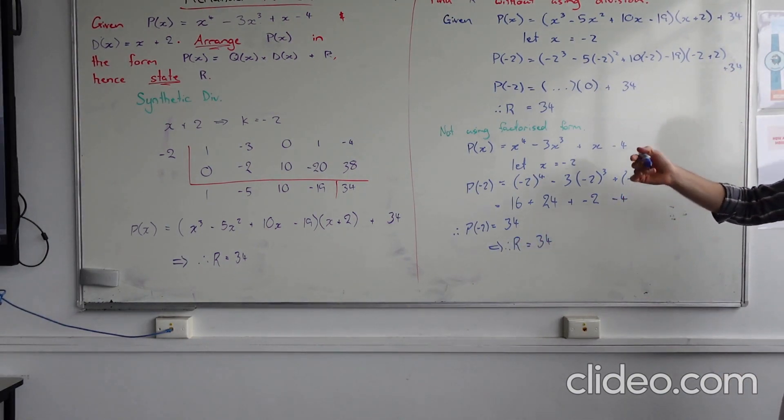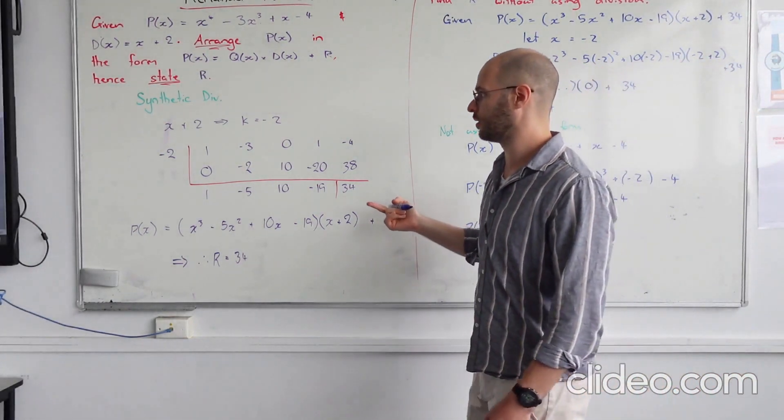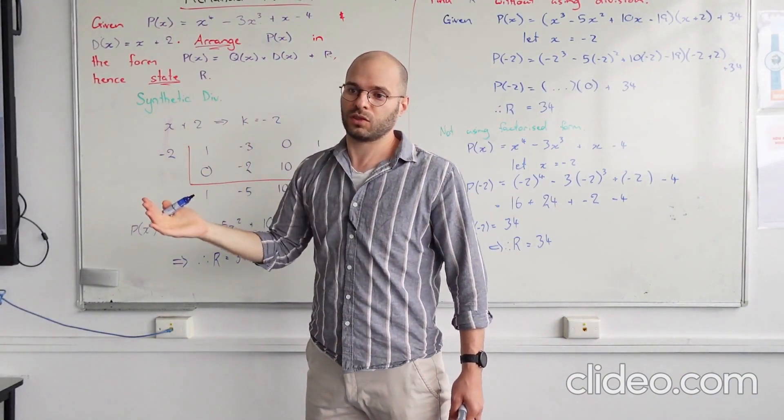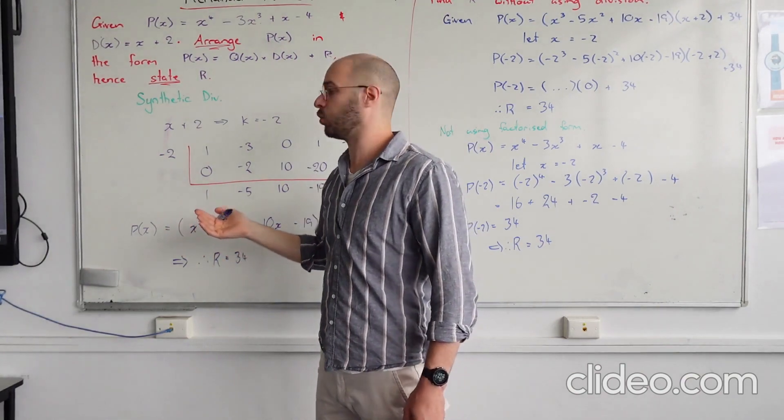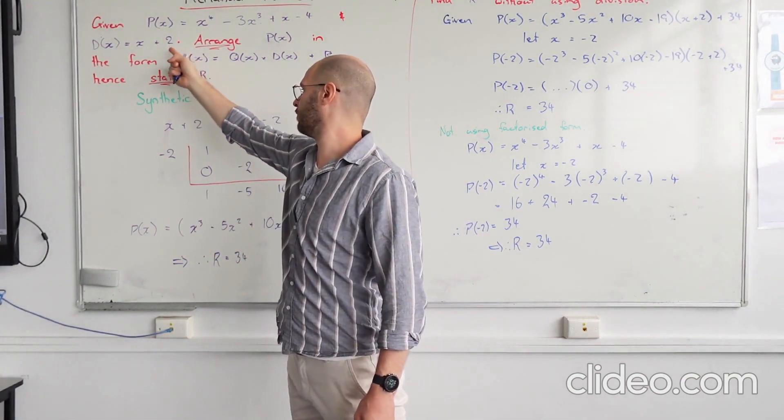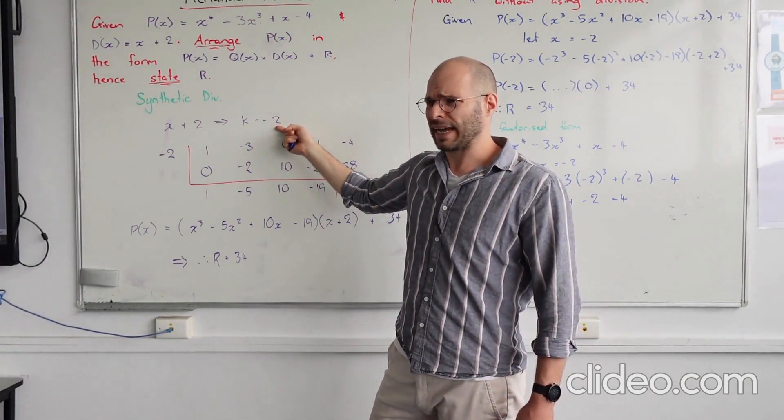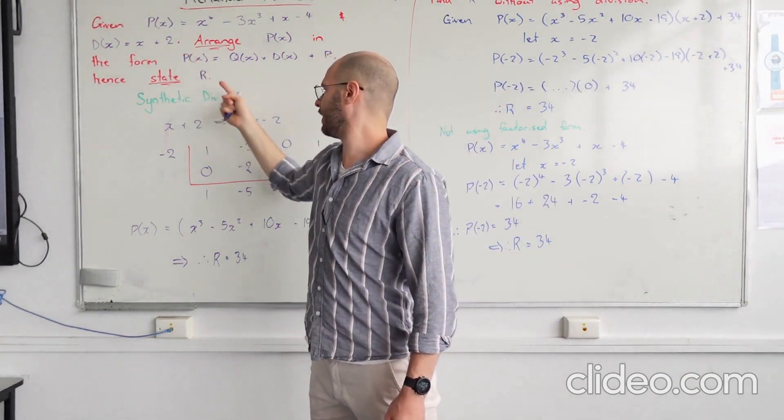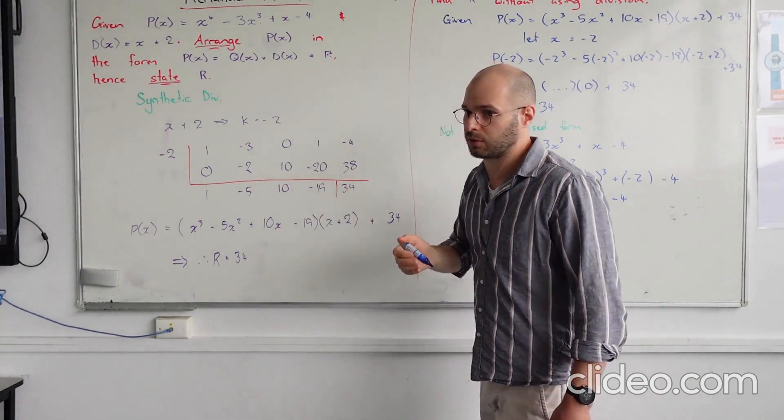What we call this is, we call it the remainder theorem. If we know a factor, we can actually get, suppose we want to use a divisor. If we want to see what the remainder is going to be, then all we need to do is negate the constant in the linear factor that we're dividing through by, sum it in, and it reveals the remainder.